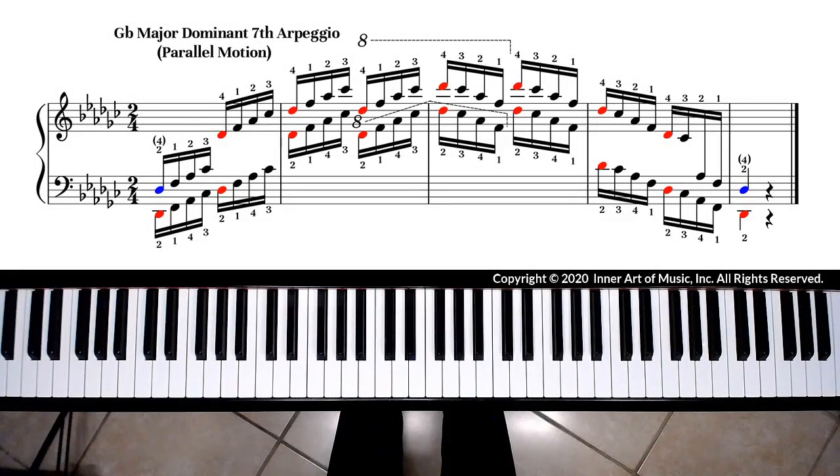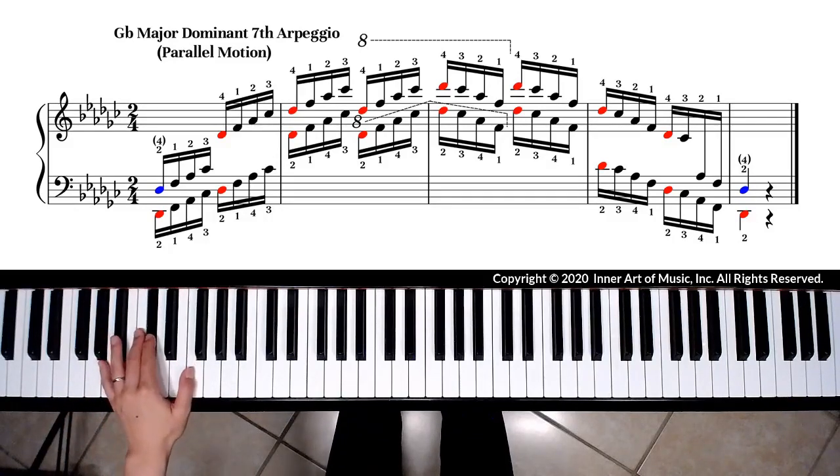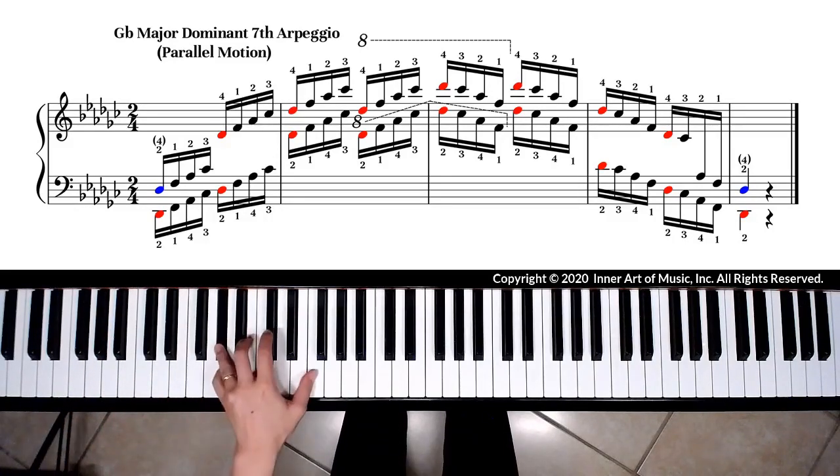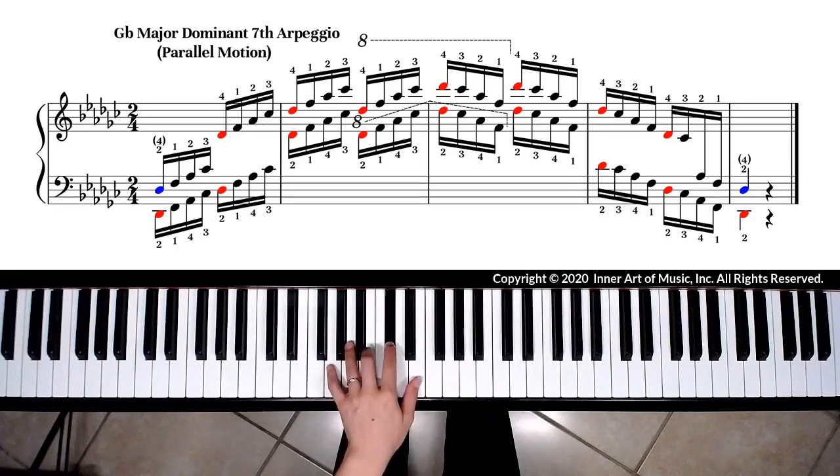The left hand fingerings for the dominant seventh arpeggio of Gb major are 2, 1, 4, 3, 2, 1, 4, 3, 2. We arrive on Db with second finger.